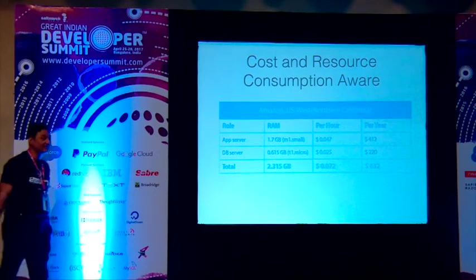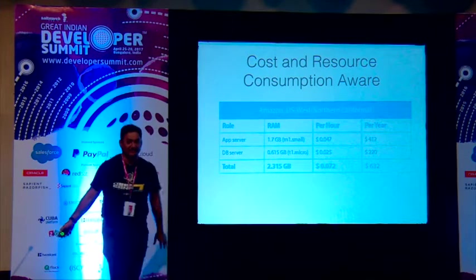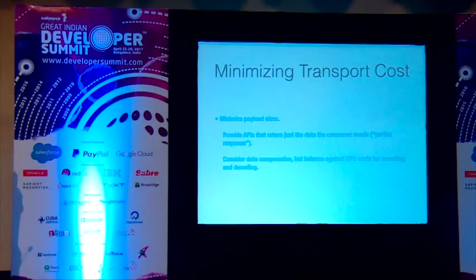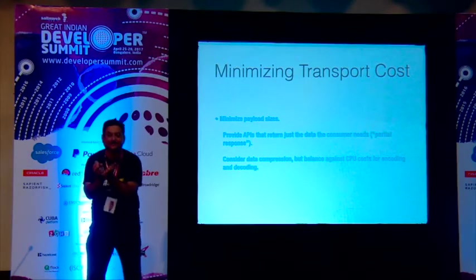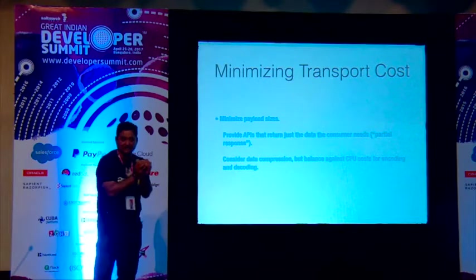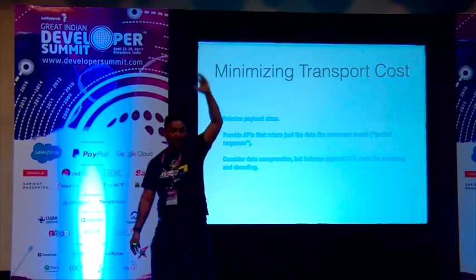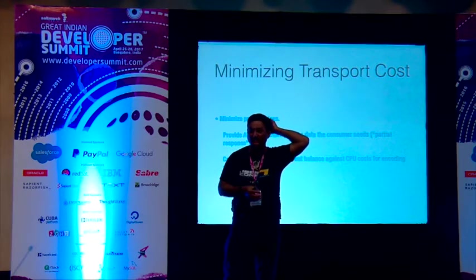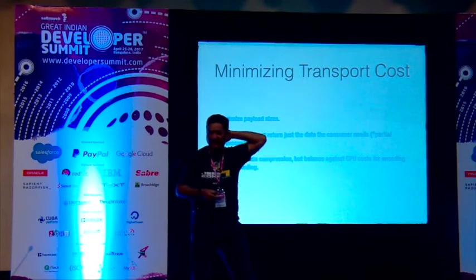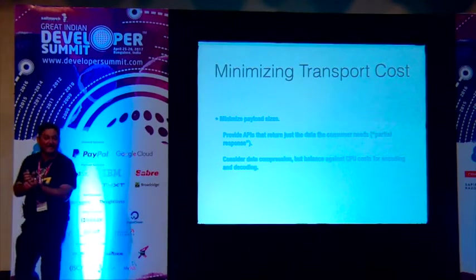Serverless architectures are coming in. With serverless, you have code and you inject it wherever you need it. You minimize transport cost by providing APIs that return only partial responses — send only what you really need. If a customer has a huge order object but only wants a high-level view of how many orders and how much money they spent, don't send the whole object. Use partial items. Same thing applies to data compression — compress the data before sending.